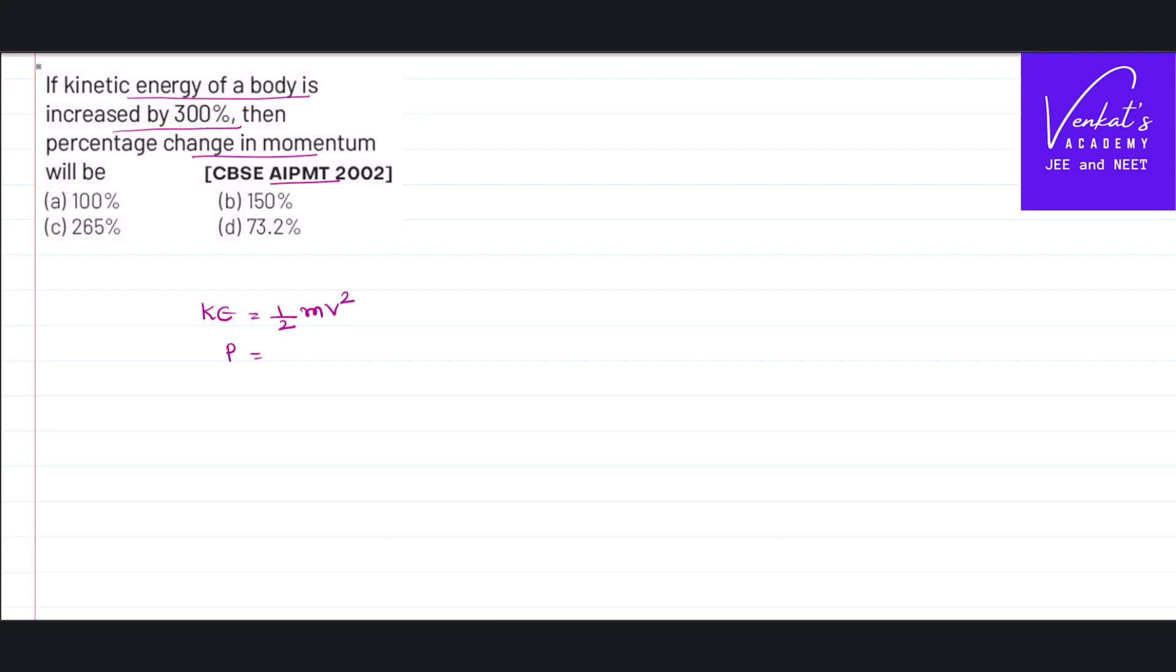We also know momentum P is mass into velocity. Now I shall express this kinetic energy in terms of momentum. V square is there but only m is there, so let us multiply and divide K with mass m. Then kinetic energy becomes half mv square multiplied by mass divided by mass. That is half m square V square by m. Multiply and divide with m. m square V square becomes P square by 2m.